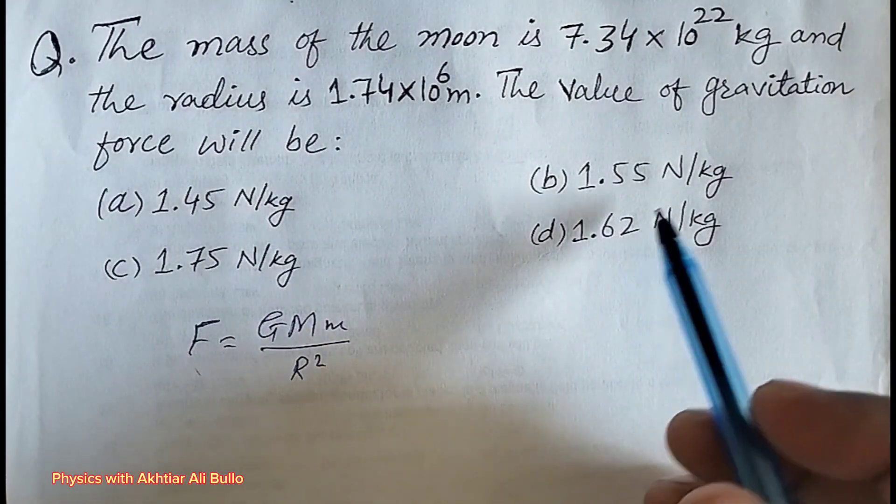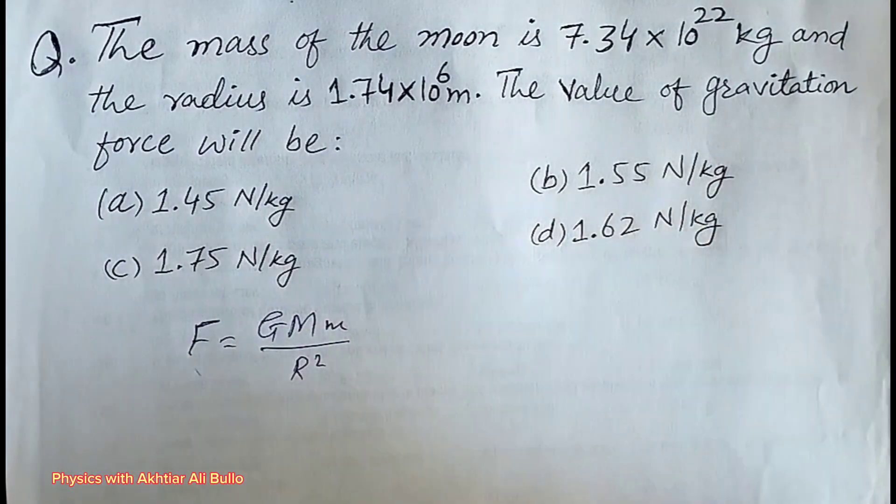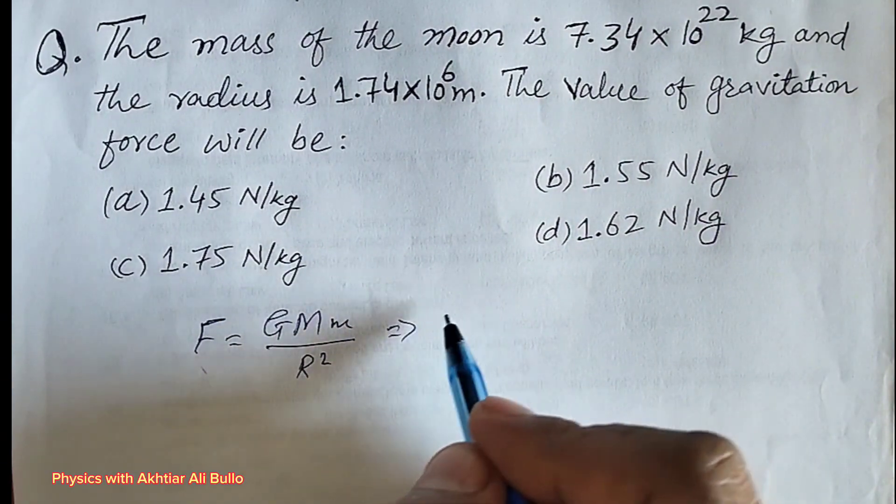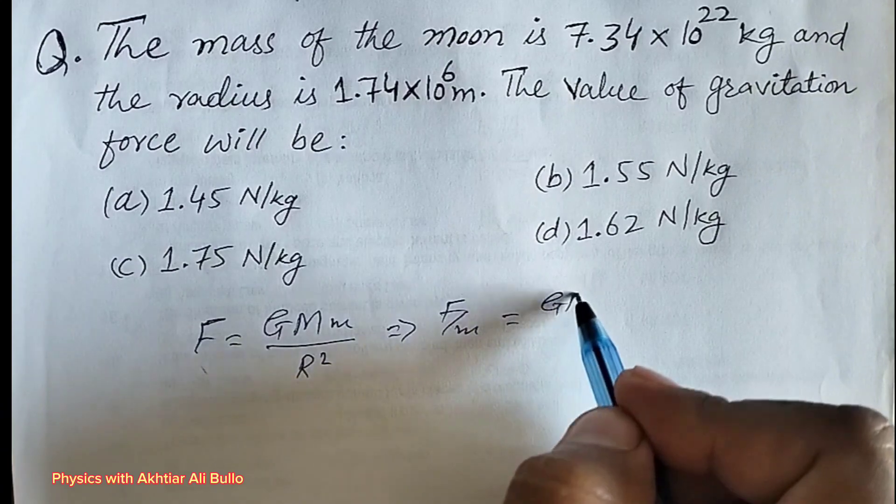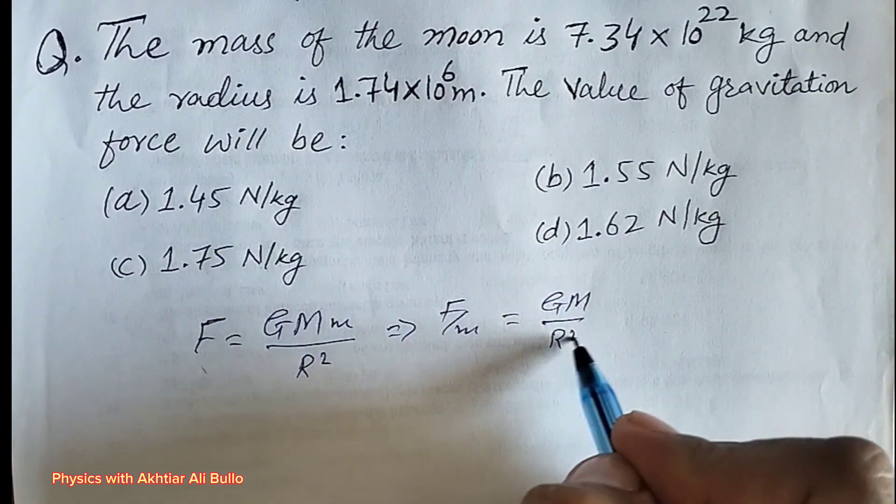We have to calculate gravitation force per unit mass. Gravitation force per unit mass will be equal to G into M upon r square.